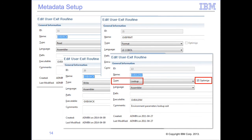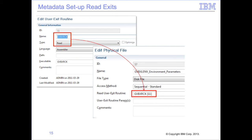Once the user exits are entered into the user exit table, they can be assigned to other appropriate metadata components. For read exits, the exit must be assigned to a specific physical file entity. For each physical file read by views being processed, the logic table contains an RENX logic table row for that physical file. By assigning a read exit on the physical file, the generated RENX entry will contain the exit to be called each time a new record or block of data is needed. The data returned by the read exit must match the logical record assigned to this physical file.